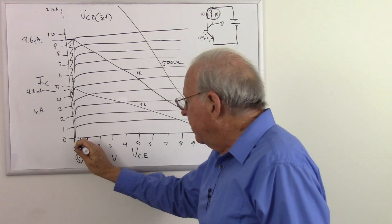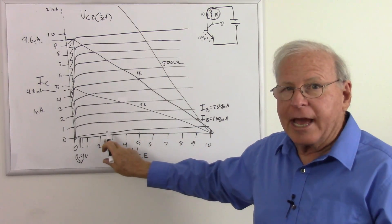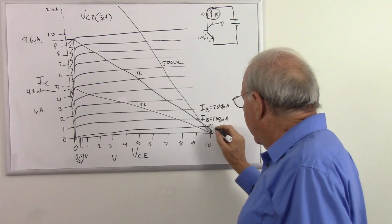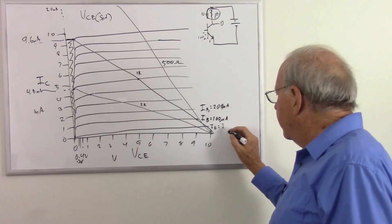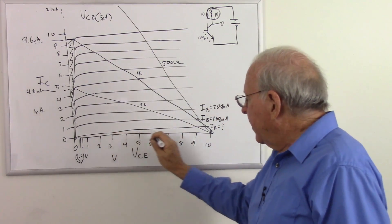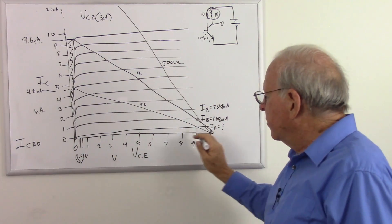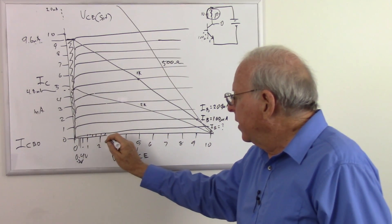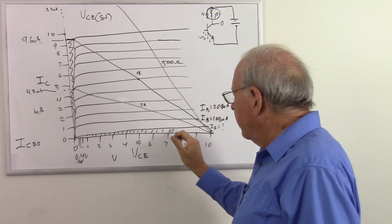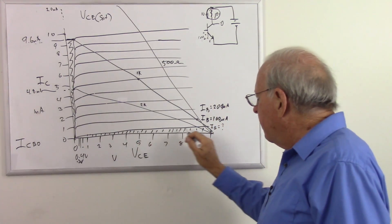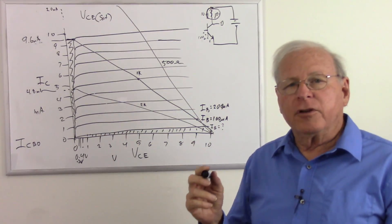With no base current, we're going to get some minimum collector current — that's in nanoamps to microamps. That current is called IC with the base open — our minimum current. We can't go below that current, so if we try to decrease our base current, we won't go down further. Decreasing our input no longer changes things, and so we are now in cutoff. This area is called the cutoff region below that minimum current, and the region over here is called the saturation region.